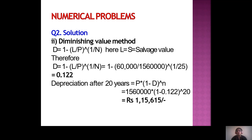Under the diminishing value method, the formula is: D = 1 − (L/P)^(1/N). So D = 1 − (60,000 / 15,60,000)^(1/25) = 0.122. Depreciation value at end of 20 years = P × (1 − D)^N = 15,60,000 × (1 − 0.122)^20 = rupees 1,15,615.